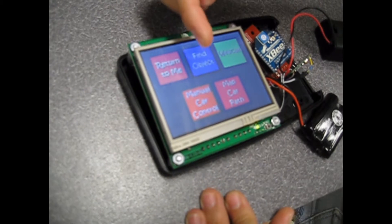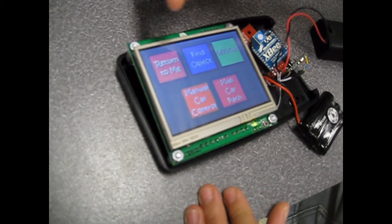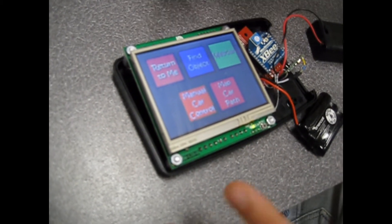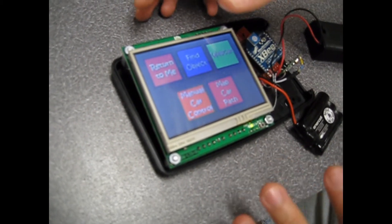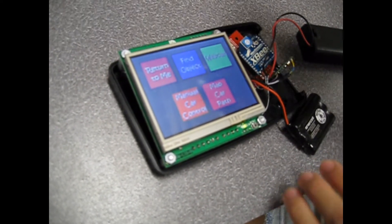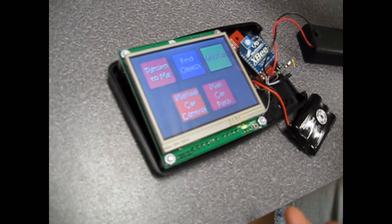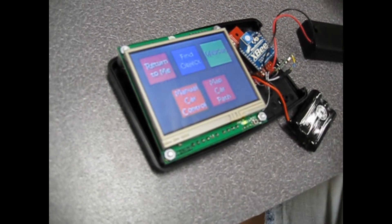When you hit Manual Car Control, the user will be able to manually control the car using this controller. And then when you hit Map Car Path, after you hit Return to Me, the car will send data of the path that it took to get back to the controller.